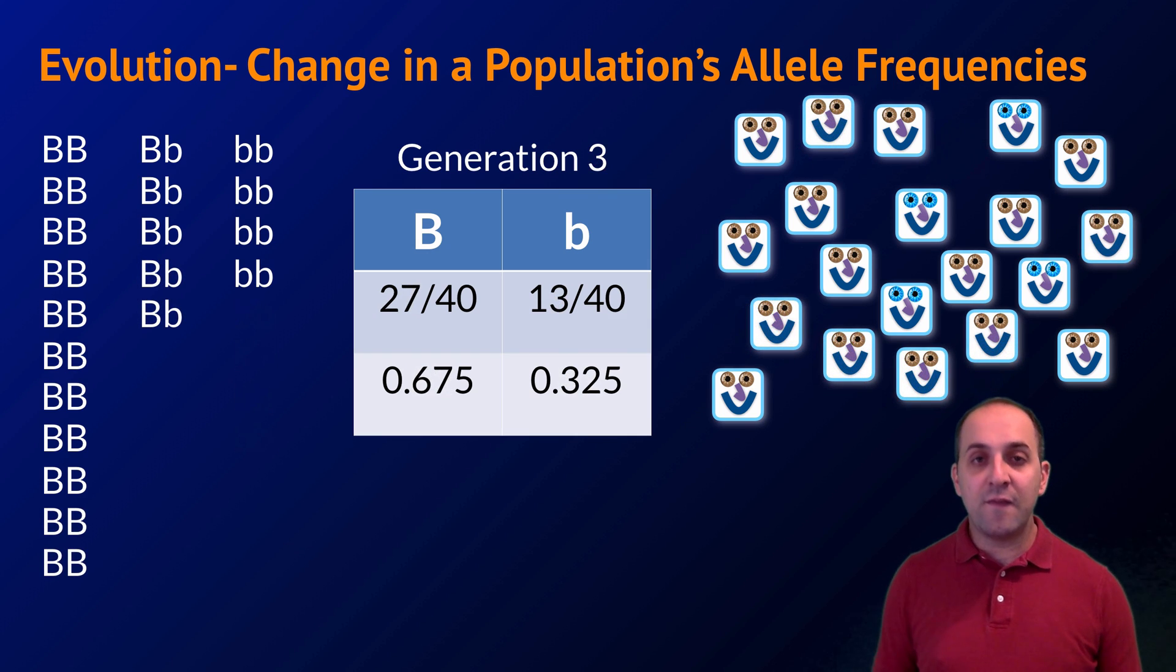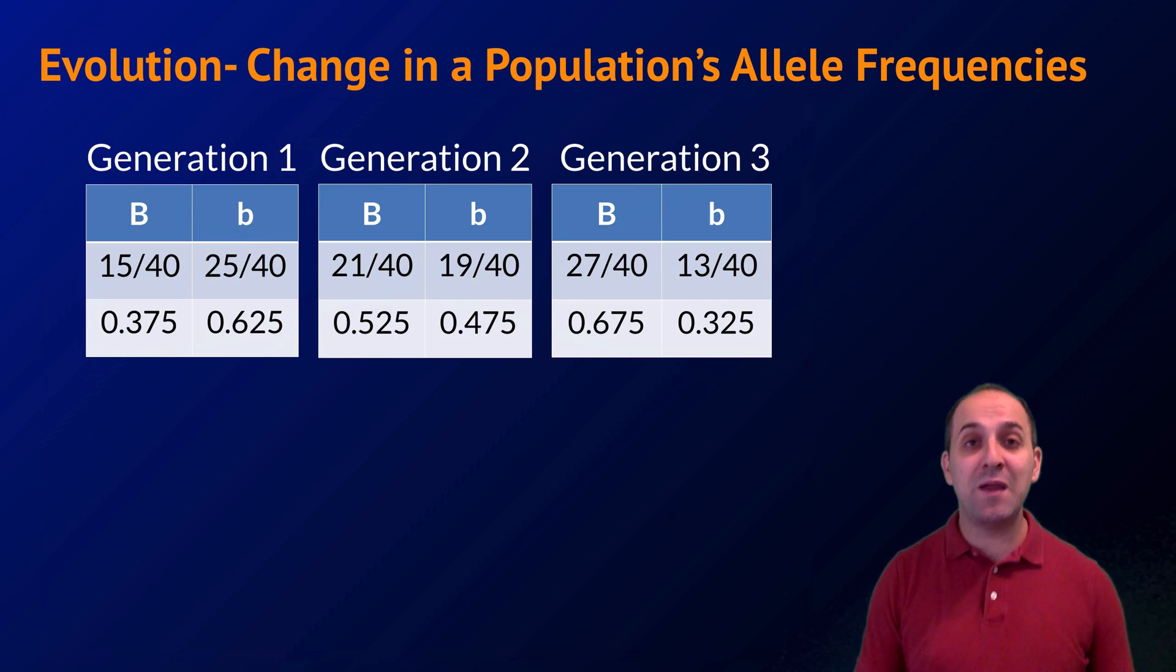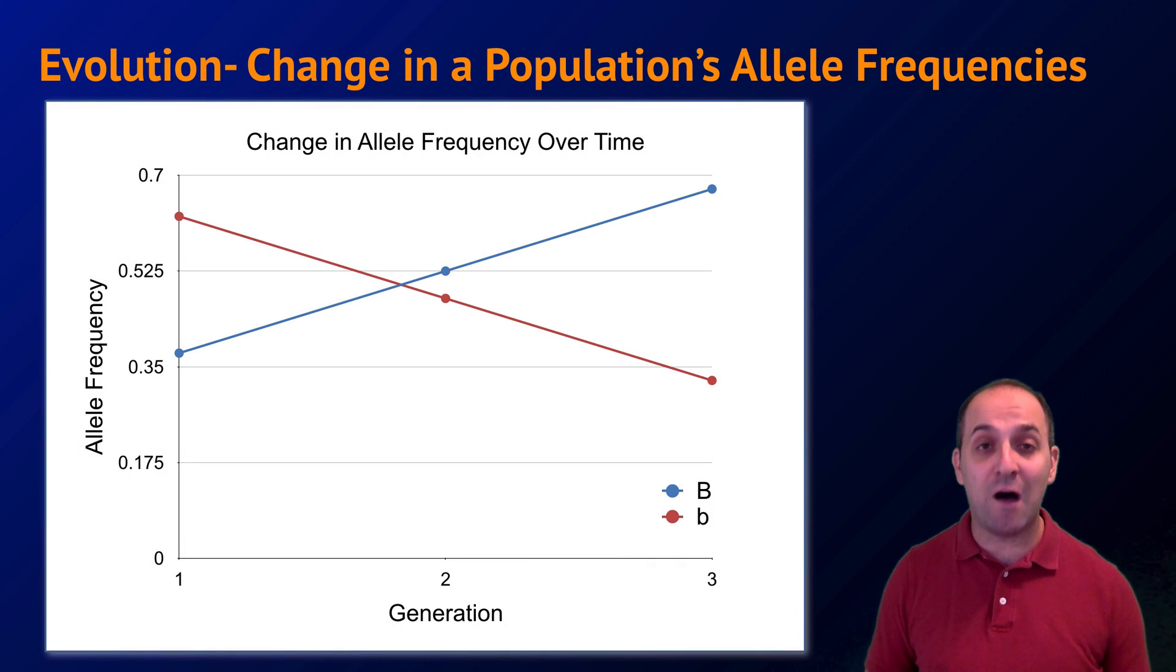Here in generation 3, we can see that the allele frequencies have changed again with the number of blue-eyed individuals decreasing even further and the number of brown-eyed individuals increasing as a result. Note that in each generation, the allele frequencies for big B and little b have changed. By definition, that means that our smiley population is evolving from one generation to the next. We see that our big B allele is increasing over time and our little b allele is decreasing over time.